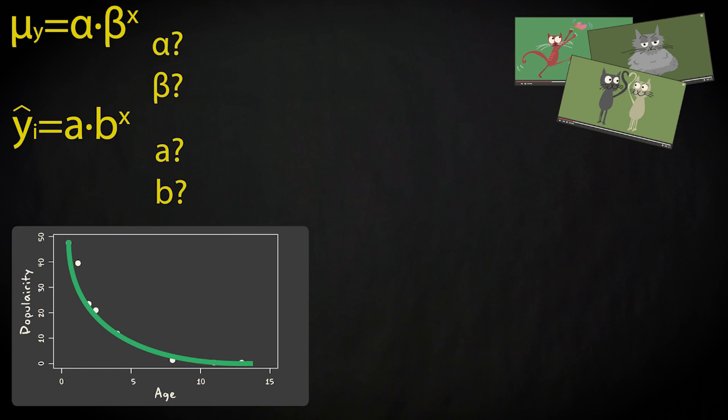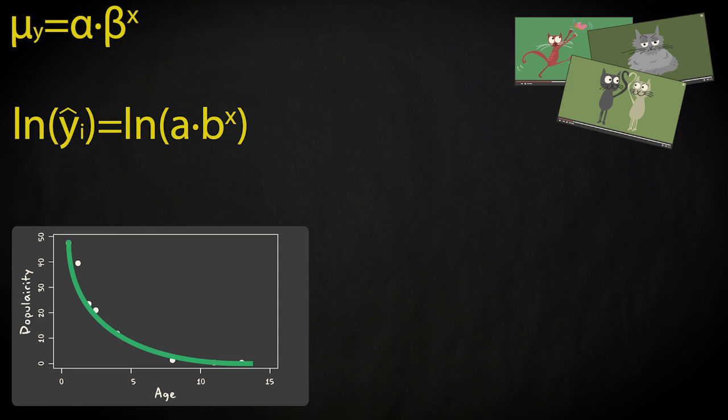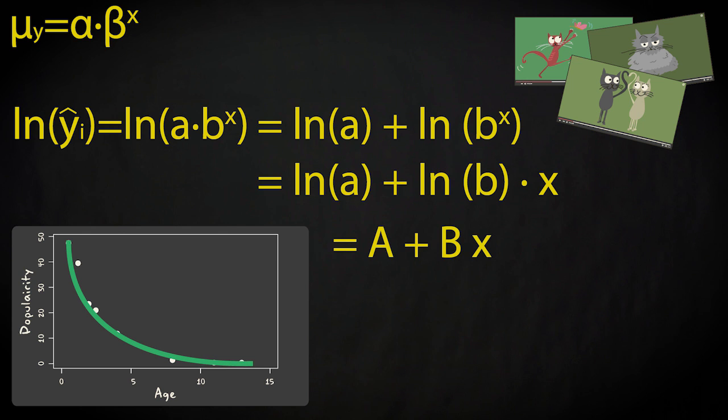So how do we obtain estimates for α and β, or a and b, if we consider the regression model at the sample level? Well there's a trick we can use. If we take the logarithm on both sides of the equation, the equation transforms into a linear model.